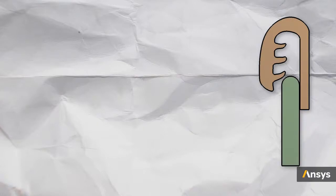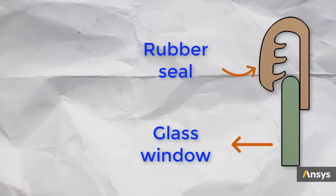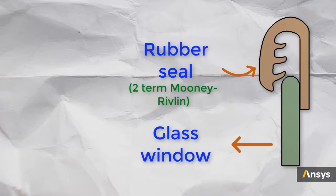Here is the geometry of the window glass seal assembly that we will use. The rubber material is modeled using a two-term Mooney-Rivlin model and the laminated glass is modeled as a linear elastic material model.